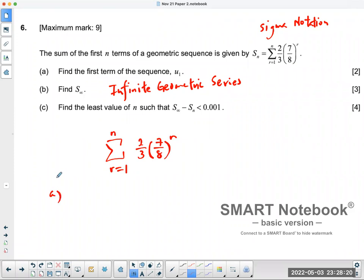Part A of the question says find the first term. Even though this is a sum, when you put r equal to 1, you're really finding the sum of one term. The sum of one term is really just u₁. So u₁ is equal to the sum of one term, which means you put 1 into the function or the general formula, 2/3 times 7/8.